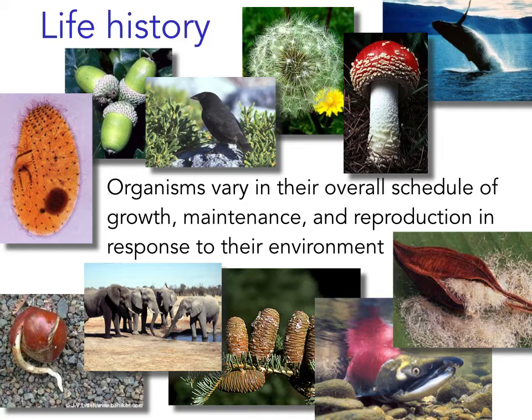The combination of traits that govern the schedule of these life events for an organism is called its life history. Life history theory posits that the schedule and duration of key events in an organism's lifetime are shaped by natural selection to produce the largest number of surviving offspring in its environment. Because life history traits directly affect an organism's ability to produce surviving offspring — that is, its fitness — life history traits are all in some way related to an organism's capacity to reproduce. Each species represents a unique evolutionary solution to the problem of effectively allocating limited time, energy, and resources to growth, maintenance, and ultimately reproductive success.